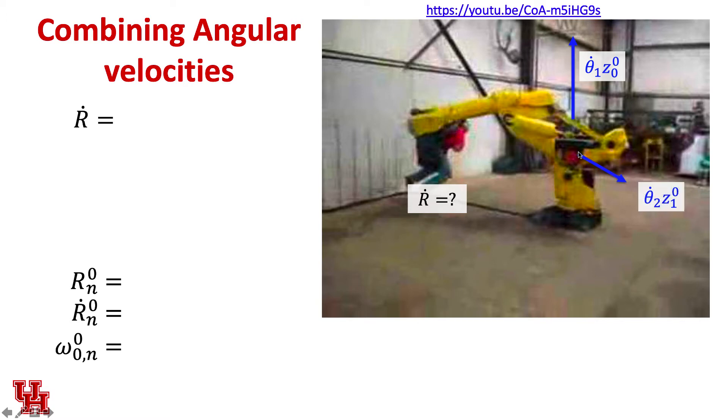Our next vector is the shoulder vector, and we scale that by theta two dot. And we have to put z one in the zeroth frame. And we continue onwards. This is our elbow joint. So we take z two and put it in the zeroth frame. And then we multiply it by how fast we're rotating around that joint, or how fast theta three is changing, theta three dot. And then we go on to theta four dot around the z three in the frame zero. And then to figure out how fast we're actually moving at the end effector, we need to add those vectors together.